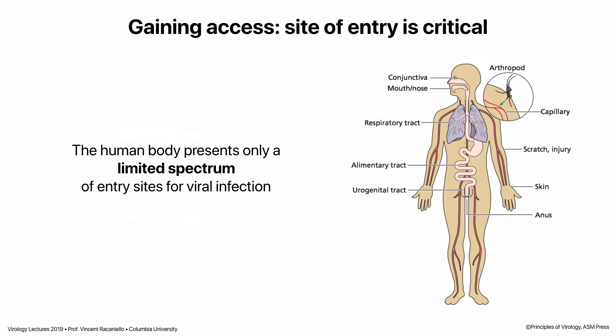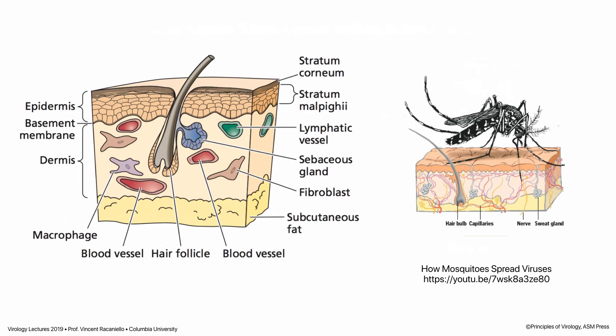Let's talk about gaining access to a host. We have a limited spectrum of entry sites for virus infection. They include our mucosal surfaces — respiratory, alimentary, and others — our skin, and the eyes, mouth, and nose. So it's pretty restricted.